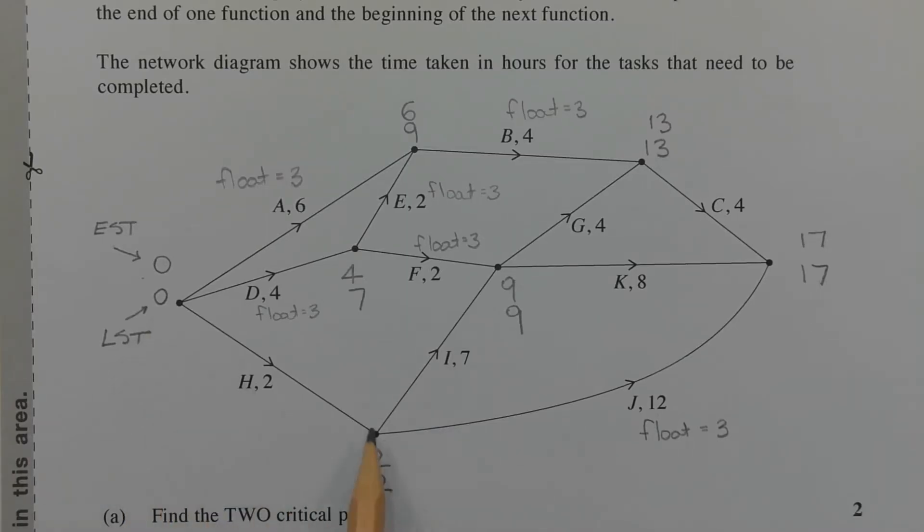Let's look at task H. Starting at zero, adding two hours, we get to two hours here. Two plus seven gives us nine. And that's why there's a nine here. So look at task G. Nine plus four gives us thirteen. Let's look at task C. Thirteen plus four gives us seventeen. Let's look at task J. Two plus twelve gives us fourteen. Seventeen is the higher of the two numbers which is why the seventeen goes here for the EST.